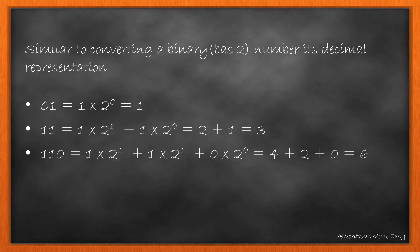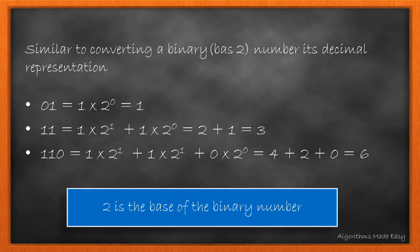This approach is similar to converting a binary number into decimal. We multiply the number with 2 raised to the position where the rightmost position is 0 and increases as we move left. Here 2 is the base of the number since binary numbers can only have two states 0 or 1. These are called base 2 numbers.